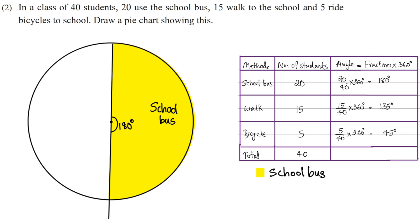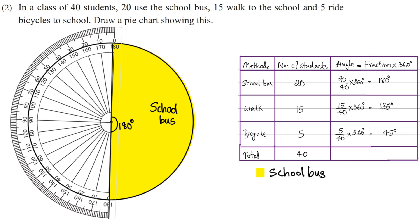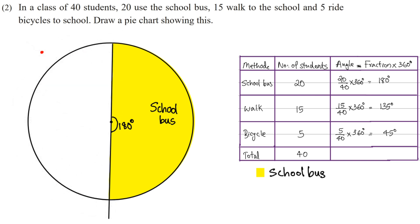We measure with a protractor at the center. We measure 0, 20, 40, 60, 80, 100, 120, 135 degrees. So we mark a point here and draw a line from the circular center. We are going to do the walk segment, measuring the angle as 135 degrees.